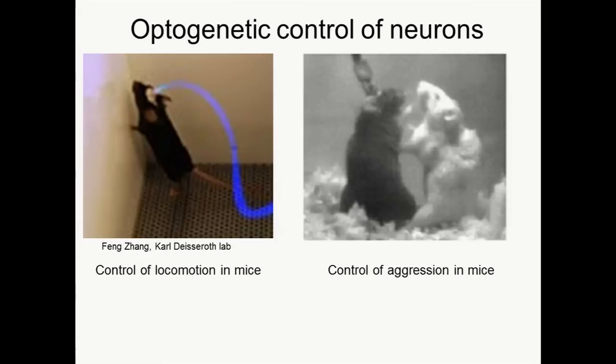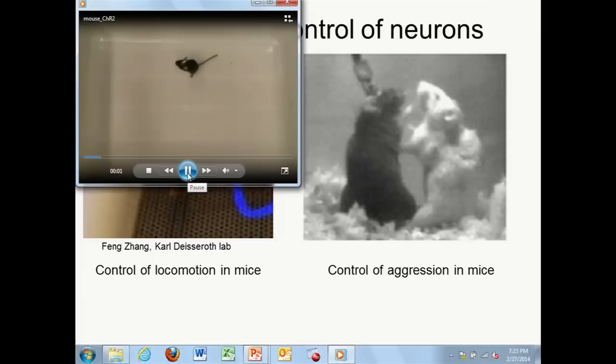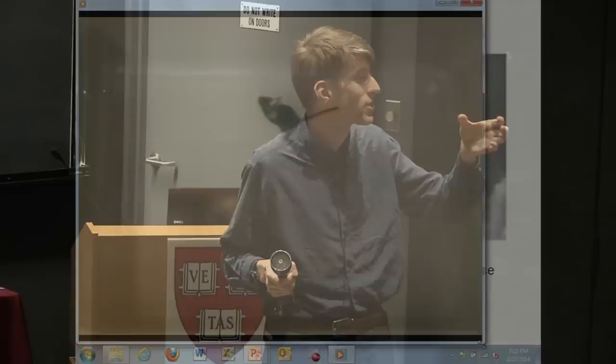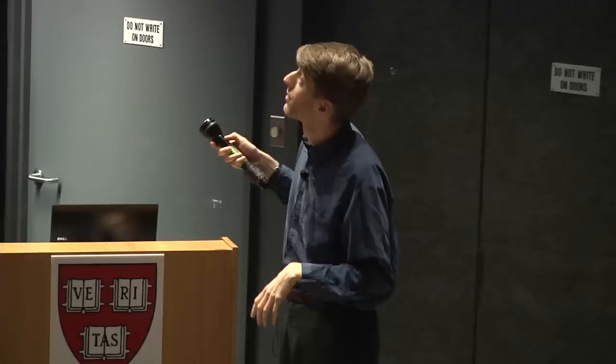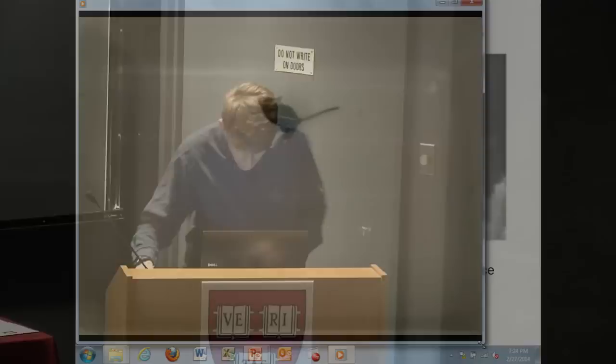Here's an example from my friend Feng Zhang when he was a grad student at Stanford. This is a mouse with an optical fiber going into its head. Feng injected this mouse with a virus containing the gene for channelrhodopsin — a blue-light-activated ion channel. When you shine blue light on it, it opens a little pore in the membrane of the neuron and can cause the neuron to fire. In this particular mouse, the channelrhodopsin is in its motor cortex. The mouse is going around, and when the blue light goes on, the mouse starts running in circles. It keeps running in circles as long as that blue light is on, and then returns to its previous behavior when the light goes off.